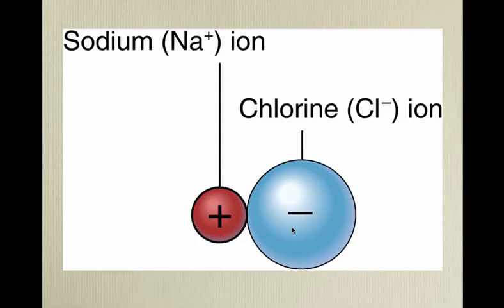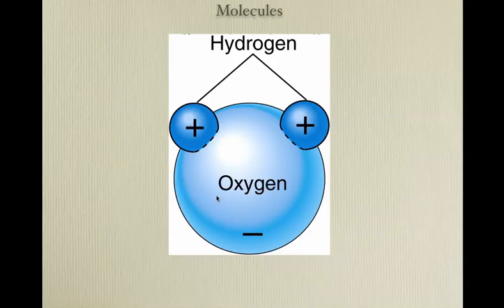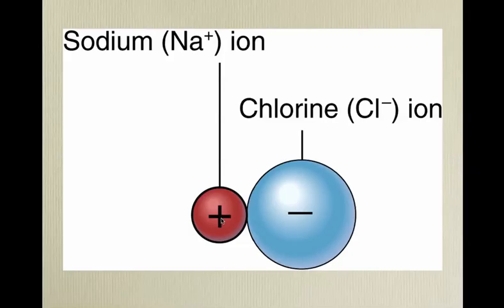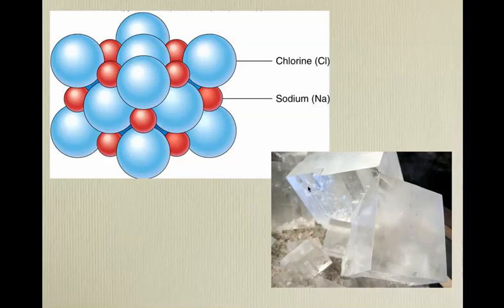Here is a molecule of salt. Sodium loses its electron; chlorine steals it. Unlike water in which the electron is shared, chlorine pretty much just steals sodium's electron — chlorine becomes a negative ion, sodium becomes a positive ion. This is an ionic bond. In water, this is a covalent bond.